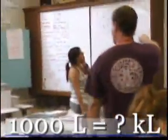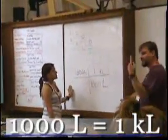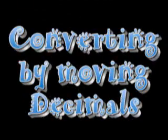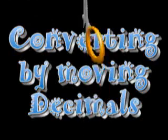1,000 times 1 is 1,000. 1,000 divided by 1,000 is one. That's your answer. Awesome.